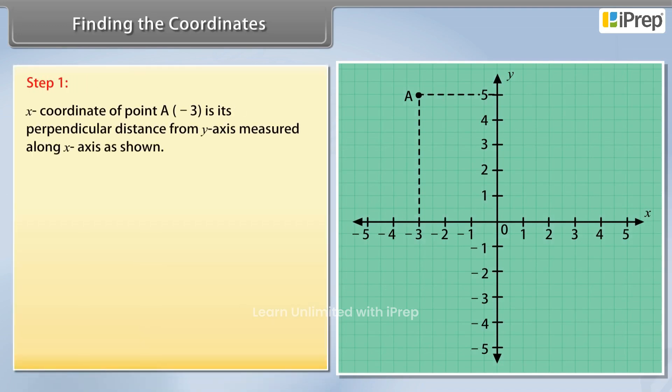Step 1: X-coordinate of point A (minus 3) is its perpendicular distance from y-axis measured along x-axis as shown.